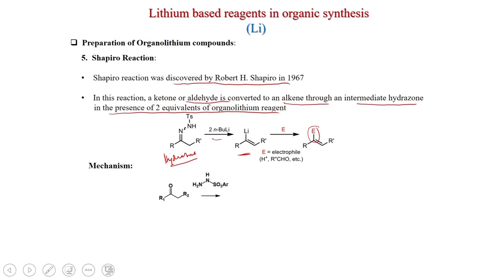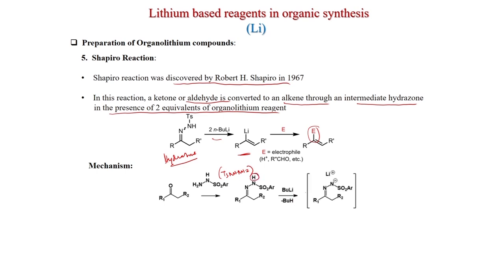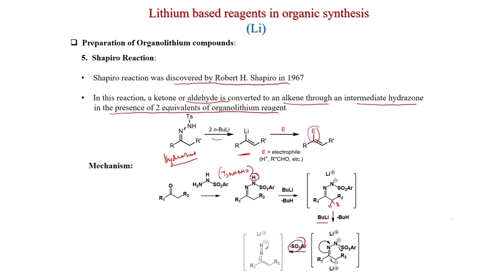The mechanism: the carbonyl compound first reacts with tosyl hydrazine to give the hydrazone. One equivalent of n-BuLi deprotonates the NH (which is quite acidic) to give the lithiated species. A second equivalent of n-BuLi deprotonates the adjacent C-H to give a dilithiated species. Rearrangement then occurs, followed by elimination of SO₂Ar to give the dianion, then nitrogen extrusion generates the vinyl lithium, which on treatment with an electrophile gives the electrophile-incorporated olefin.